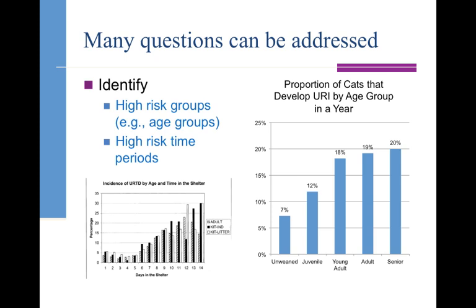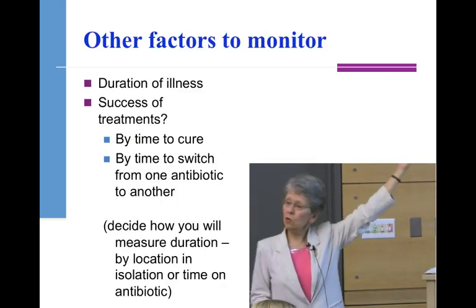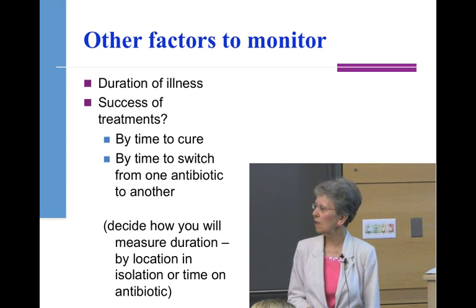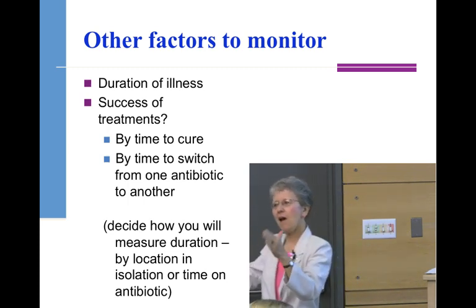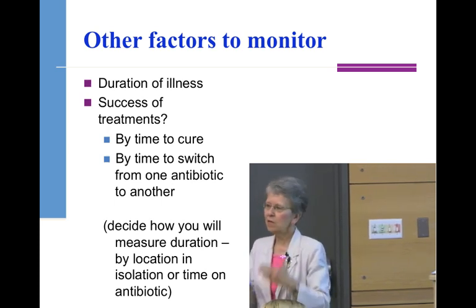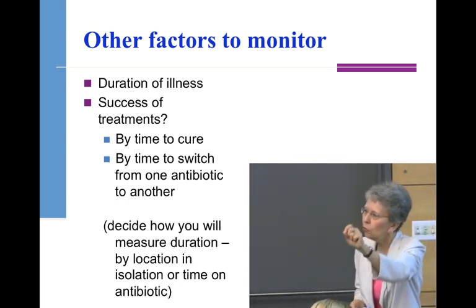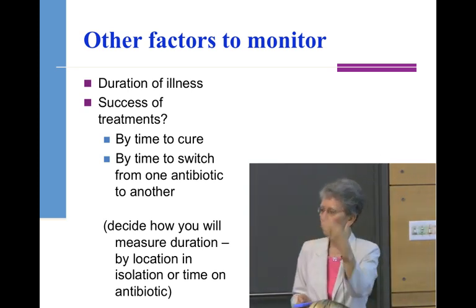Here's an example showing the increase in risk of disease with time in shelter — that's upper respiratory in cats. Dramatic. You can start looking at risk in each age group. You could look at how long an animal that comes in sick and is in your infirmary stays there on average — how much time do they tie up space? Is it seven days, is it 20 days? Looking for places where you could intervene and potentially make a difference.